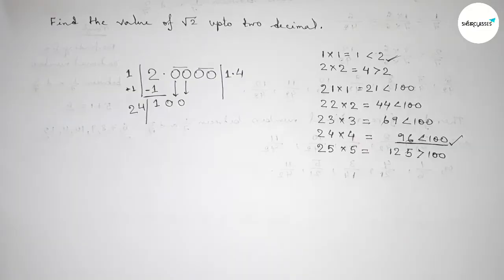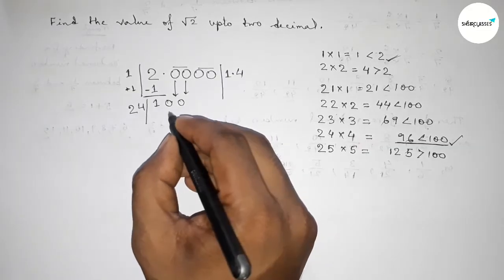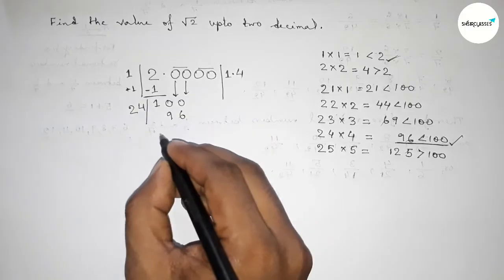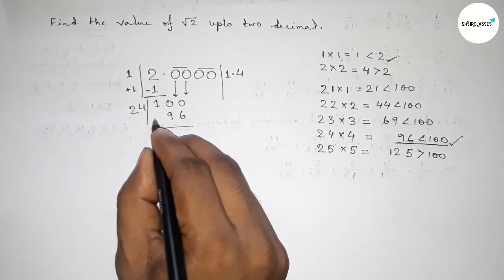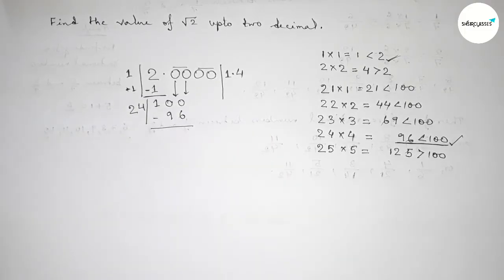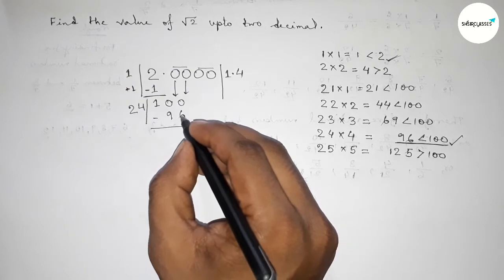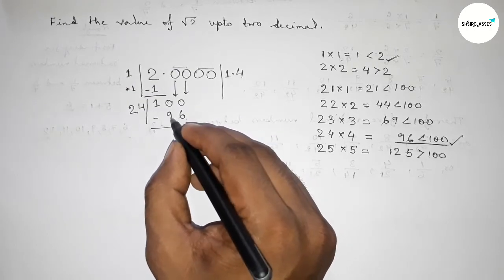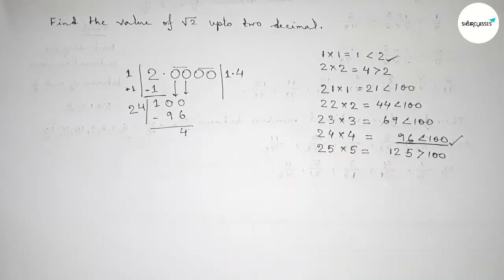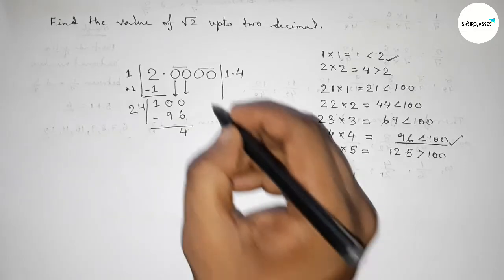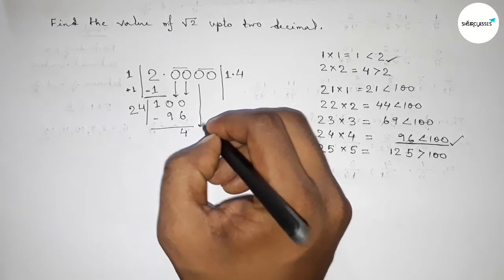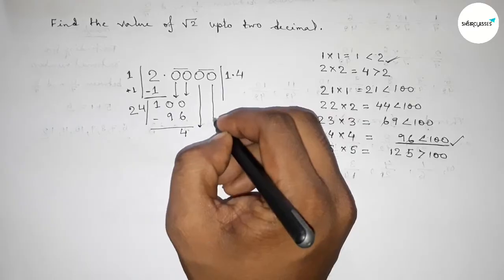So the digit is 4 and 24 fours are 96. Now subtracting: 100 minus 96 equals 4. This gives remainder 4. We bring down the next pair of zeros to get 400.